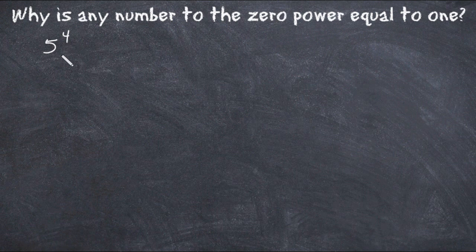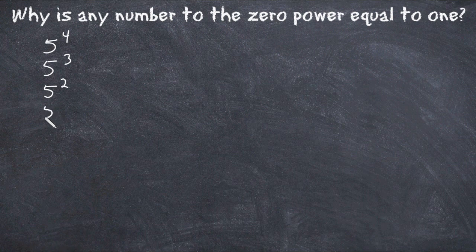I'm going to start with the power of four, and then decrease the power by one and write five to the power of three, five to the power of two, five to the first power, and five to the zero power.